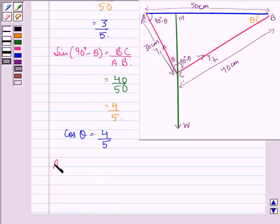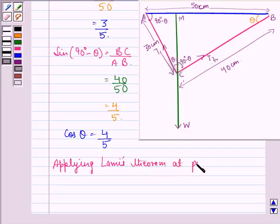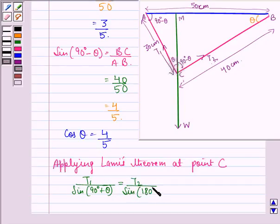Now, applying Lami's theorem at point C, we get T1 divided by sin of 90 degrees plus theta is equal to T2 upon sin of 180 degrees minus theta is equal to W upon sin 90 degrees.